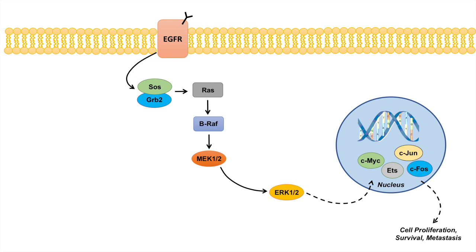So what will happen is EGFR will activate SOS and GRB2, which will then activate RAS. Now, how is EGFR actually activated? It's actually activated by TGF-alpha, or Transforming Growth Factor alpha. And surprisingly — a little bit disturbing about this pathway — is that the RAS-RAF-MEK-ERK pathway can actually lead to the transcription and production of more TGF-alpha, which can actually keep activating the pathway. So this pathway can kind of auto-activate itself.